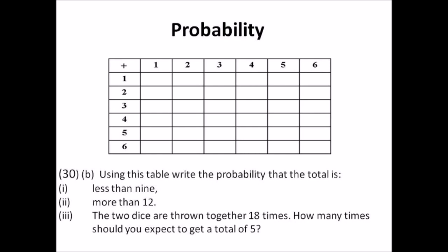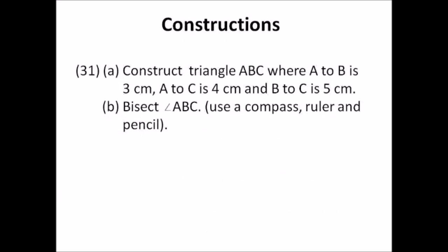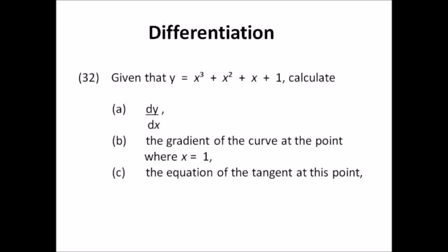Number thirty-one: constructions. Use pencil for this. a) Construct triangle ABC where AB is 3 centimeters, AC is 4 centimeters, and BC is 5 centimeters — this gives a right-angle triangle. b) Bisect angle ABC using compass, ruler, and pencil. Draw the triangle first, then bisect angle ABC. Remember I need to see all your construction marks to get full marks. Use your protractor to check the right angle.